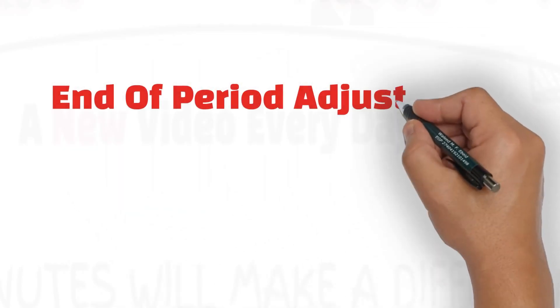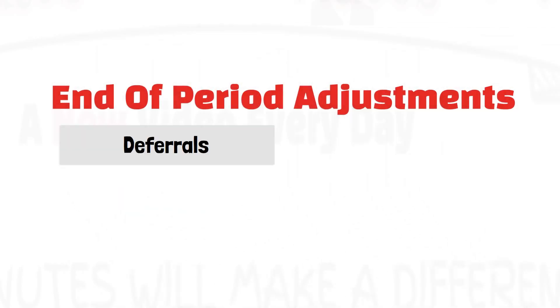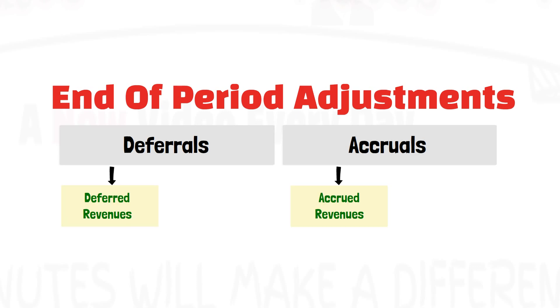End of period adjustments are either a deferral or an accrual adjustment, and each of these two involves revenues and expenses.